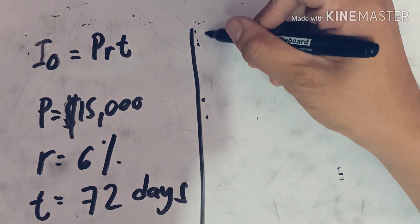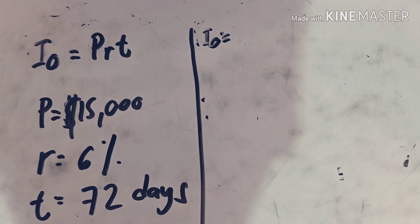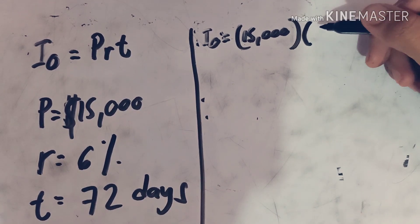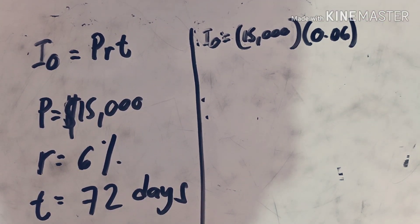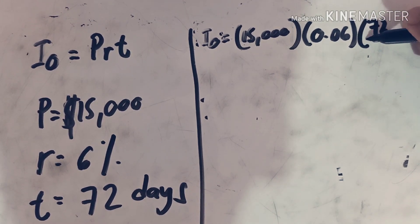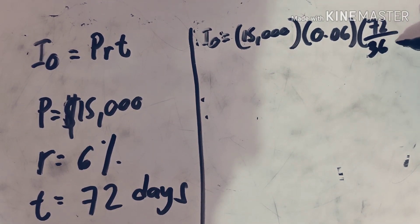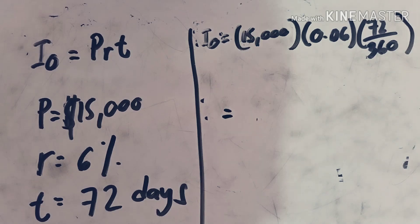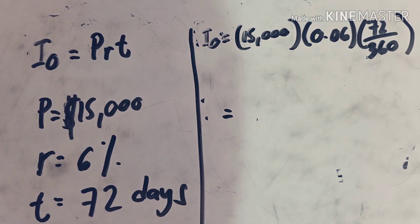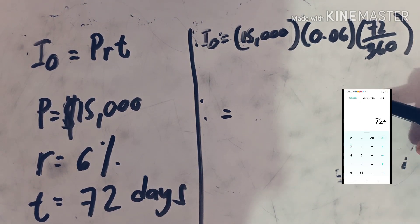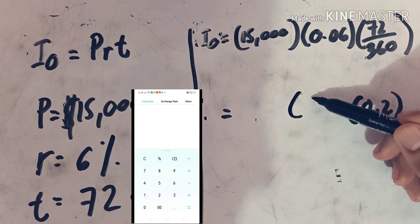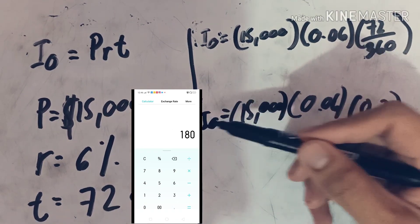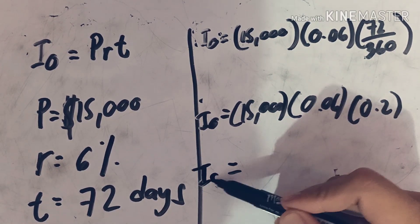Now let's answer it by substituting the given value. Ordinary interest equals $15,000 multiplied by 6%, which is 0.06, and multiplied by the time, which is 72 days divided by 360 days since we're looking for the ordinary interest. 72 over 360 is 0.2. Multiply by 0.06 and multiply by $15,000. The ordinary interest is $180.